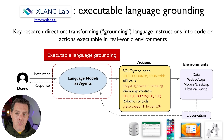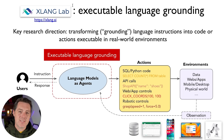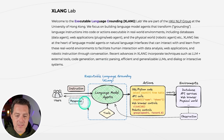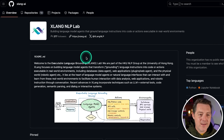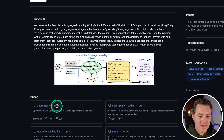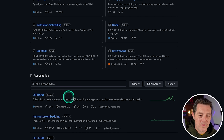One of their big innovations is X-lang, which basically takes natural language instructions and translates them into code that can be executed in an environment. Here's the X-lang website and their GitHub page, where you can get the Open Agents project as well as OS World — all open source, which is awesome.